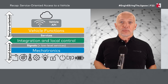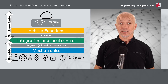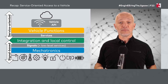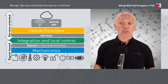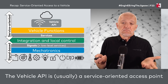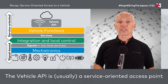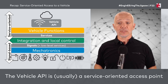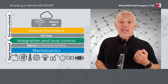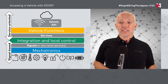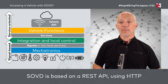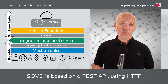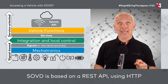As a recap from F22, we talked about service-oriented access to a vehicle and how, with a software-defined vehicle, our access would typically be via a vehicle API which would be service-orientated. This is our access point if we want to do diagnostics with a technology such as SOVD. If we're accessing a vehicle with SOVD, SOVD is based on a REST API using the Hypertext Transfer Protocol, or HTTP for short.